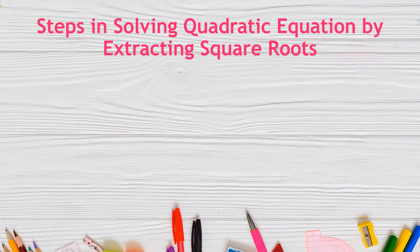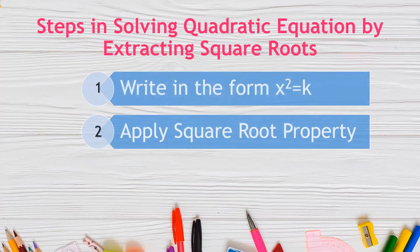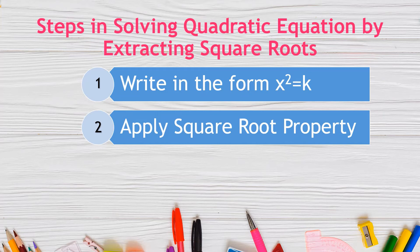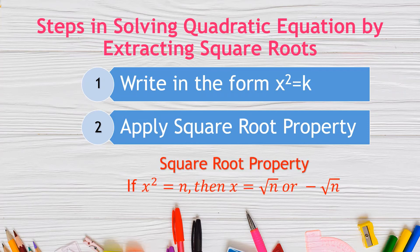In solving quadratic equations by extracting the square roots, first write the equation in the form x² = k. Note that this method can only be used for incomplete quadratic equations where b = 0, meaning the linear term is omitted. Step 2: apply the square root property, which states that if x² = n, then x = ±√n.